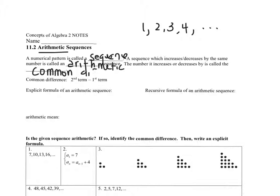Difference in math means to subtract. To get the common difference, you take the second term and subtract the first term. The common difference in the sequence 1, 2, 3, 4 is 1, because 2 minus 1 is 1, 3 minus 2 is 1, 4 minus 3 is 1. The differences share the same number — that's why it's called the common difference.